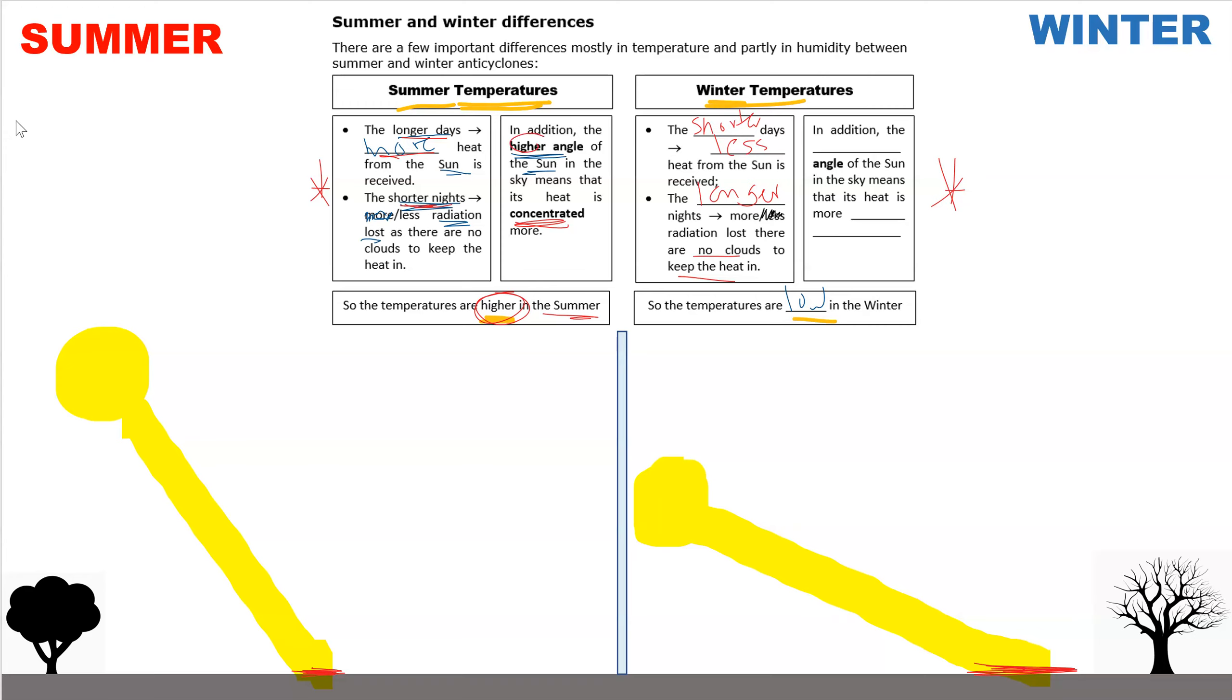And in addition, in the summer, if you've got a higher angle of the sun, in the winter, you've got the lower angle of the sun. And if the higher angle in the summer means the heat is concentrated, the lower angle in winter means the heat is more spread out. And that's why the temperatures then are colder in the winter and warmer in the summer.